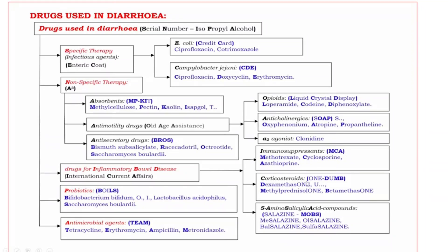Next, Corticosteroids all end with the suffix -one. Their mnemonic is DUMB, bold letters D-M-B: D for Dexamethasone, M for Methylprednisolone, B for Betamethasone.